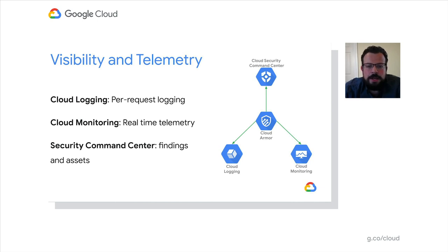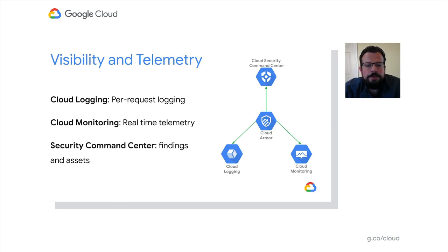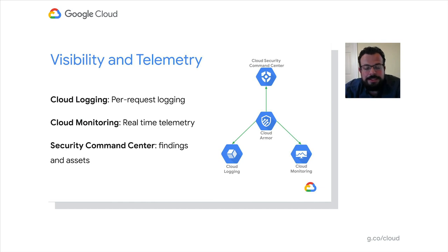Visibility and telemetry is key for any comprehensive application protection solution. Cloud Armor exposes this information in near real time across several telemetry platforms at Google Cloud. Per-request logs are captured and sent to Cloud Logging containing all decisions Cloud Armor makes with regard to layer 7 requests, as well as which rules fired and why. Real-time telemetry for request volumes is available through Cloud Monitoring in our pre-configured dashboard to help you visualize and build alerting policies against changes in traffic patterns. Correlated security findings about unexpected traffic spikes are sent to the Security Command Center to trigger investigation and incident response workflows.